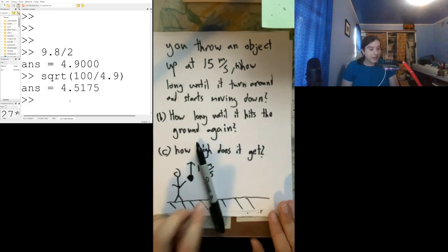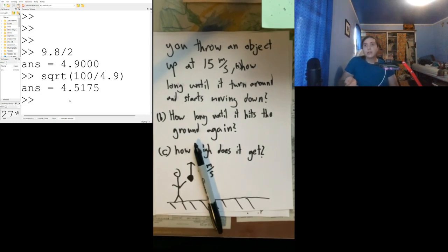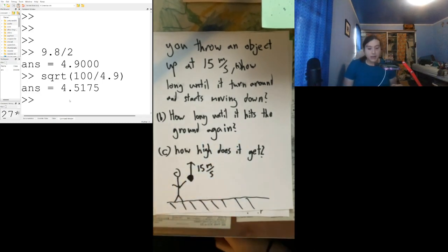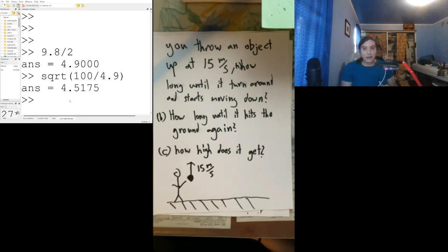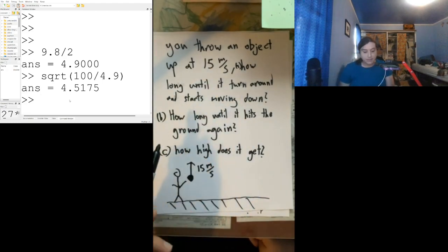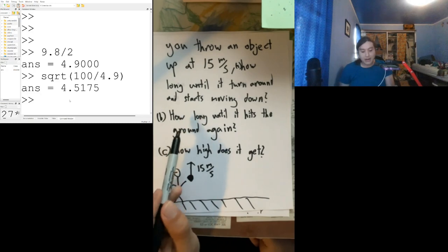Now let's consider another scenario. If we take some object — I don't have the tennis ball of science handy, just this little 3D-printed doohickey — if you toss something up in the air, there's always a tiny moment in time where it stops and then turns around. So we want to ask: if you throw something up at 15 meters per second, which is a good solid toss, how long until it turns around and starts moving down? And how high does it get? And then how long until it hits the ground again?